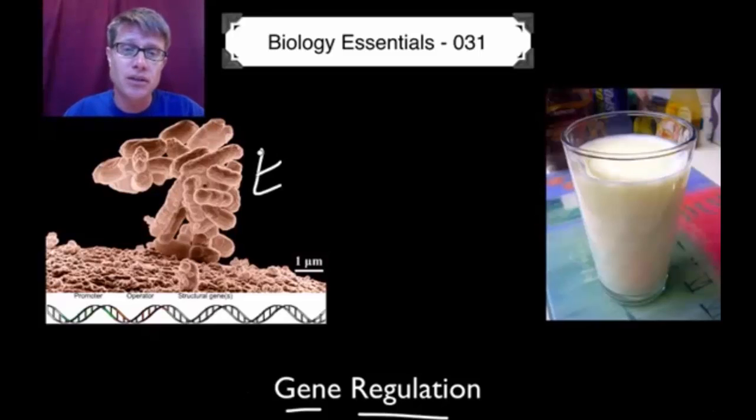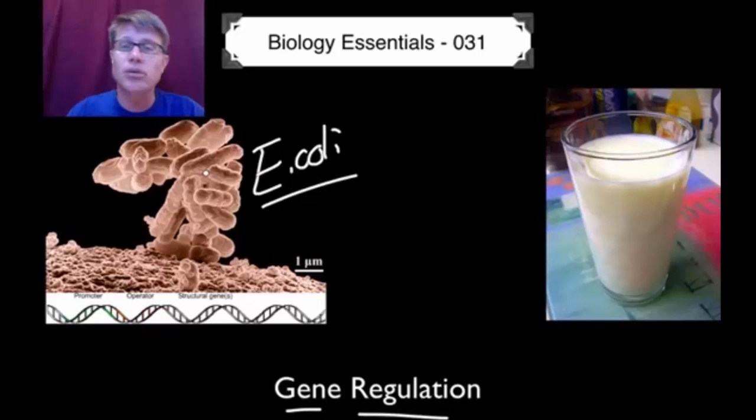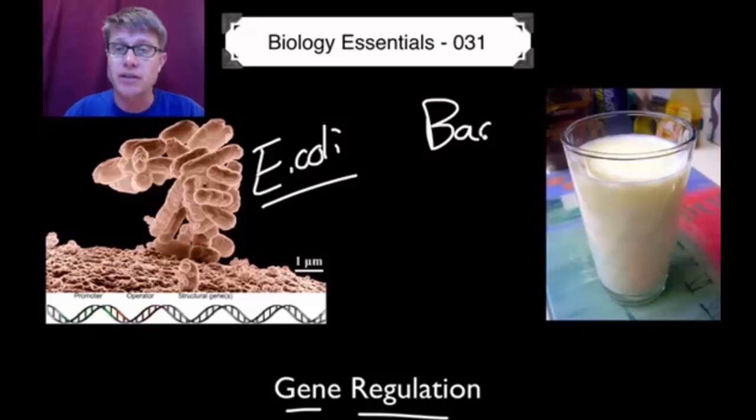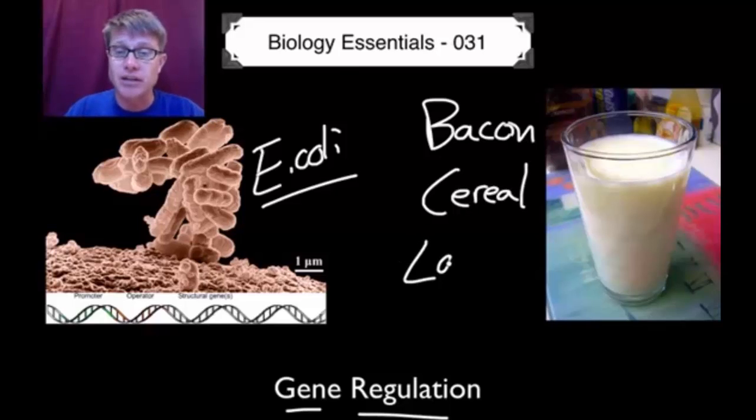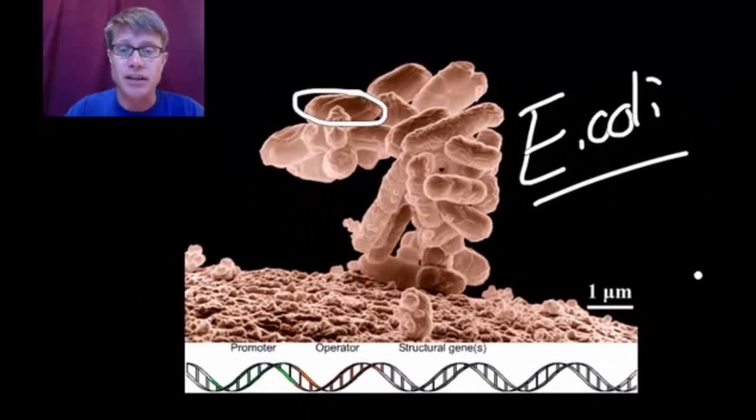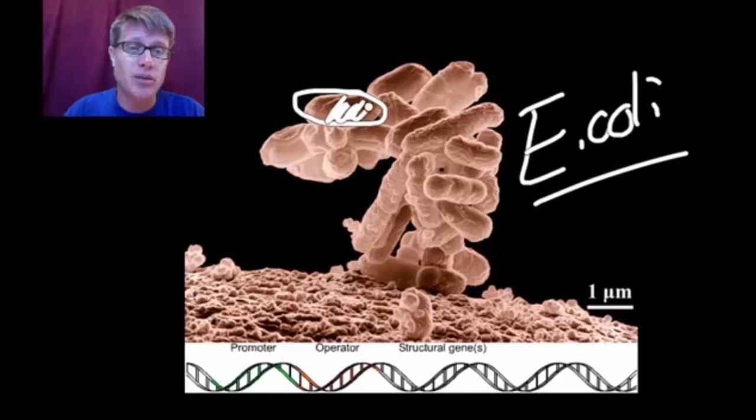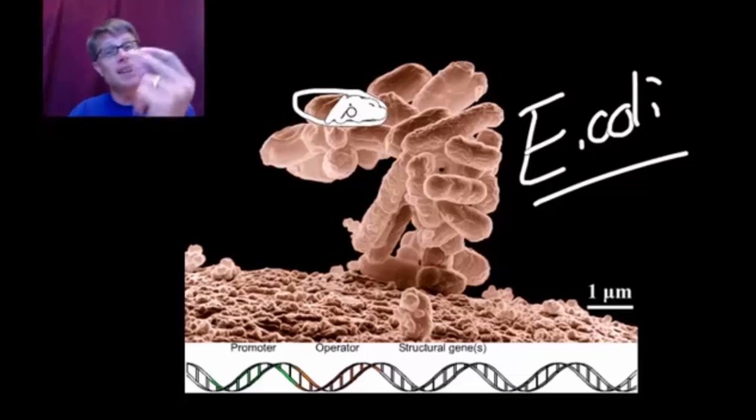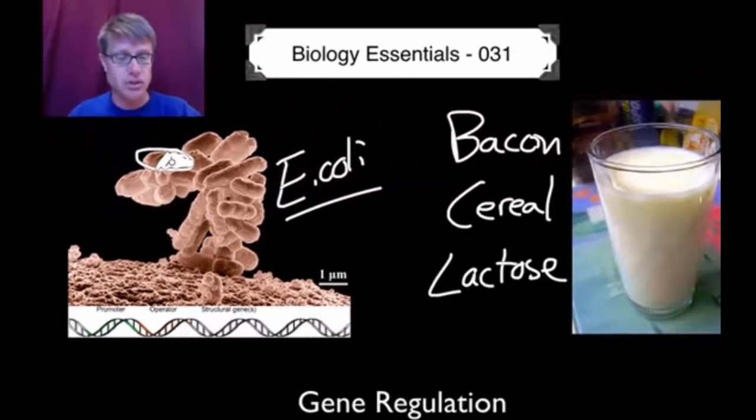I wanted to start with an organism that lives in our intestine called E. coli. E. coli is interesting in that it eats whatever we eat. So if I eat bacon for breakfast it has to break down the proteins and lipids in the bacon. If I have cereal it has to break down the carbohydrates. If I have milk it has to break down the lactose. What's interesting about E. coli is that it can go from an organism that has zero proteins to break down lactose to one where 50% of the weight of E. coli is simply enzymes that deal with lactose, and it can do it like that. So how do they do that? They do that through gene regulation.